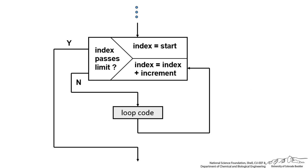The general flowchart for a For Next loop looks like this. We have an index that starts at a value — usually indices start at 1 — and then we iterate until the index passes a limit. For example, if the limit were 10, then the index goes from 1 to 10, generally in increments of 1, although you can change that. When the index passes the limit of 10, we kick out and we're done with the For Next loop.